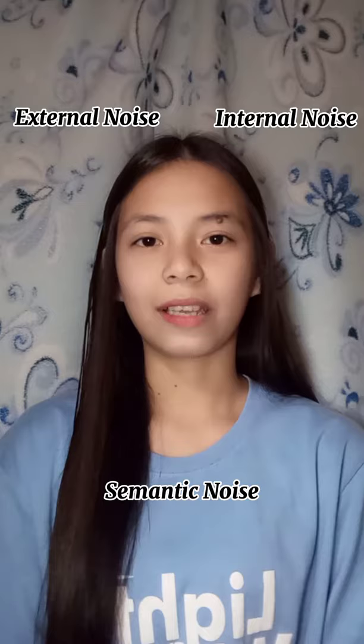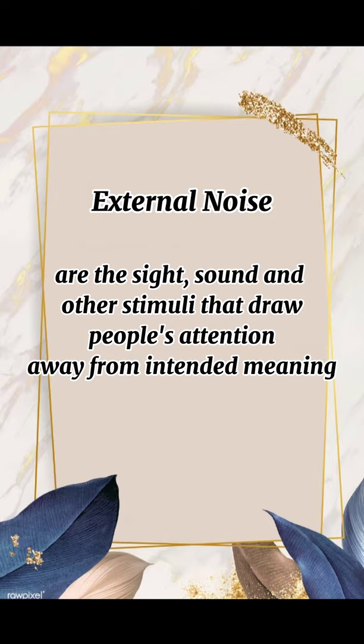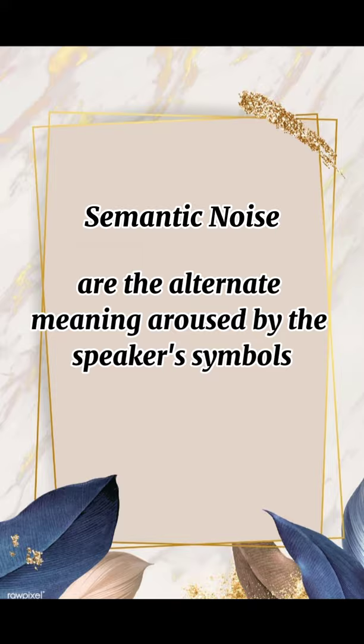We also have three types classified as noise: the external, internal, and semantic. Let me explain these. External noise refers to the sights, sounds, and other stimuli that draw people's attention away from the intended meaning. Internal noise refers to the thoughts and feelings that interfere with meaning. Semantic noise refers to the alternate meanings aroused by the speaker's symbols. Those are the three types classified as noise.